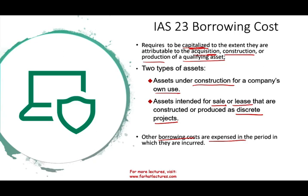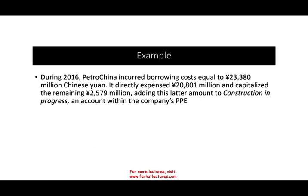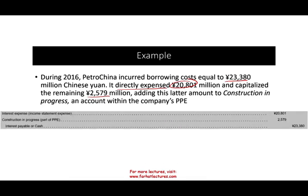Other borrowing costs are expensed in the period in which they are incurred. If it's not a qualifying asset, any cost incurred is an expense. Please remember: producing regular inventory — the interest is expensed. For example, PetroChina incurred borrowing costs equal to 23 million Chinese yuan. They directly expensed 20.8 million and capitalized the remainder — 2.5 million added to the asset. That total is their interest expense.